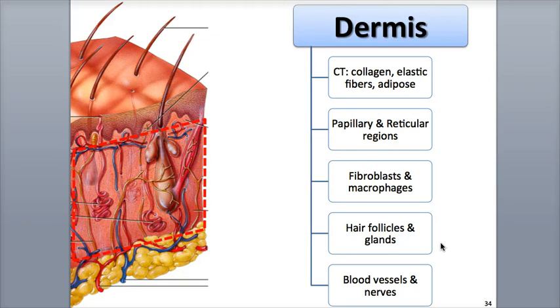There are many diverse accessory structures in the dermis, including hair follicles, glands, blood vessels, nerves, and lymphatic vessels.